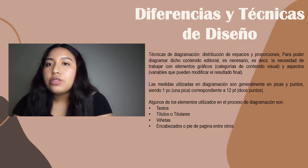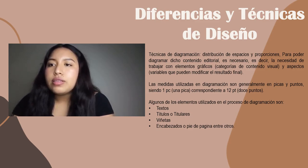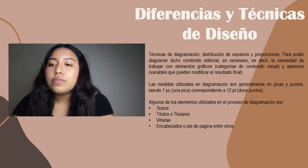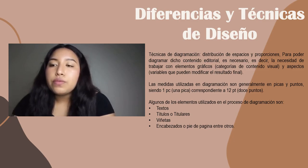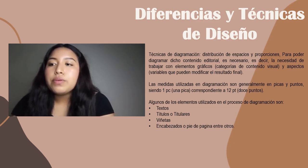Las técnicas de diagramación y distribución de maquetación trabajan con elementos gráficos de categorías de contenido visual y aspectos variables que puedan modificar el resultado final. Algunos de los elementos utilizados en el proceso de diagramación son el texto, también llamado cuerpo de texto, es decir, aquel tipo de contenido que será impreso, ya sea en un libro o publicación periódica, con artículos, crónicas, editoriales, cartas, etc.